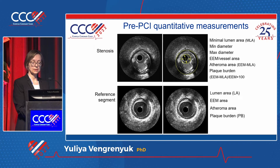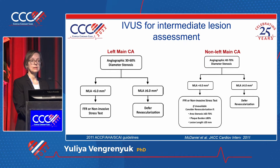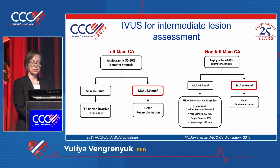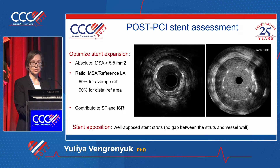IVUS can help perform all measurements — minimal luminal diameter, vessel area, plaque burden. These measurements can be used for assessment of intermediate lesions to help distinguish lesions for which we can safely defer revascularization. For left main the cutoff is 6 mm², and for non-left main lesions it's 4 mm². Over the last couple of years we routinely use IVUS for all left main PCIs.